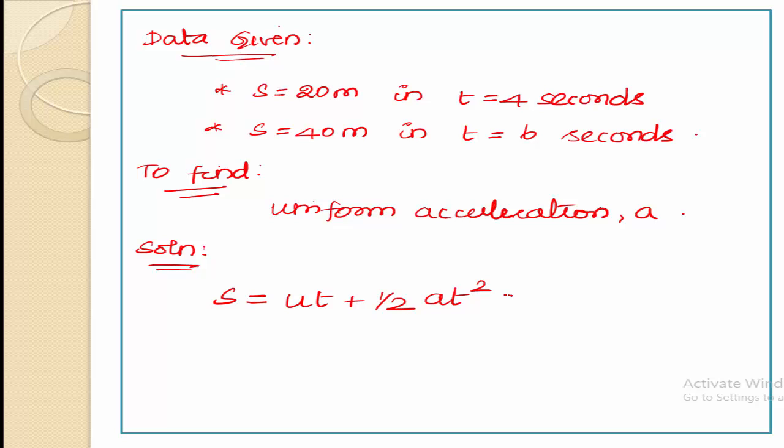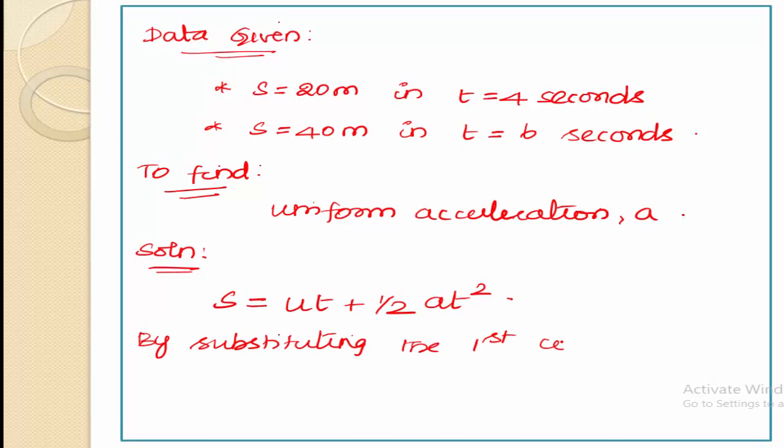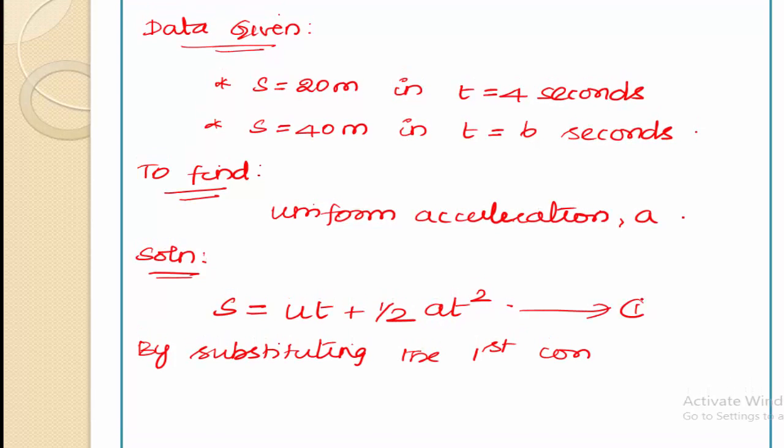The initial velocity u is not mentioned in the problem—whether it is in traveling condition or at rest is not mentioned—so we can keep u as u. By applying the first condition in equation 1, distance s is 20 meters is equal to u into time period 4 seconds.